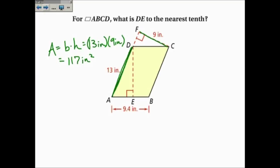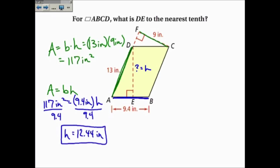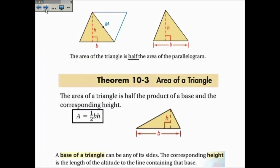Now, that's true if I use a different height and base combination. So I'll use 9.4 inches with the height of what I want to find. I'll call it H. So the area is 117 inches squared, which is equal to the base of 9.4 inches times the height of H. To solve this, I will divide both sides by 9.4, and the height is equal to 12.44 inches. Now notice this is inches and not inches squared because my answer is a length, not an area.